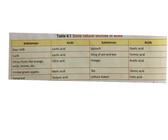Table 6.1 — Some natural sources of acids: sour milk contains lactic acid; curd contains lactic acid; citrus fruits like orange, amla, and lemon contain citric acid. Can you correlate the name 'citric acid' with 'citrus fruit'? Unripe green apples contain malic acid; tamarind contains tartaric acid; spinach contains oxalic acid; the sting of ant and bee contains formic acid; vinegar contains acetic acid; tea contains tannic acid.